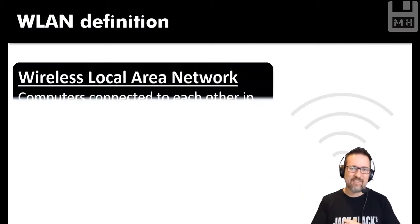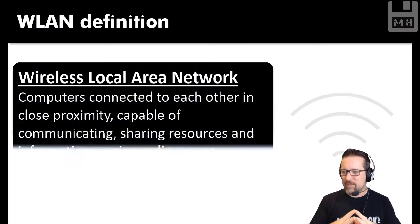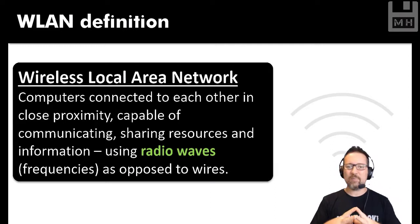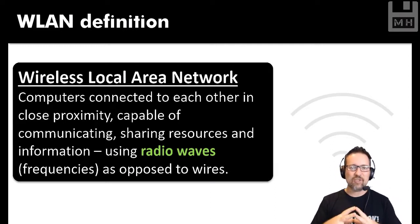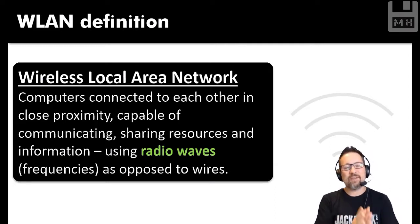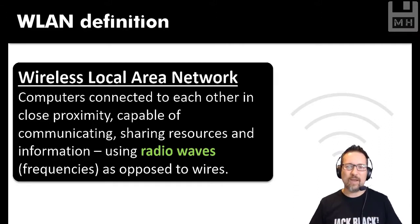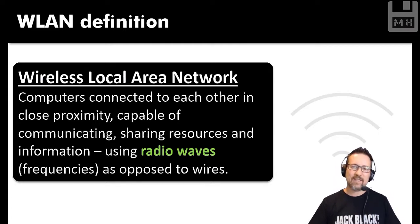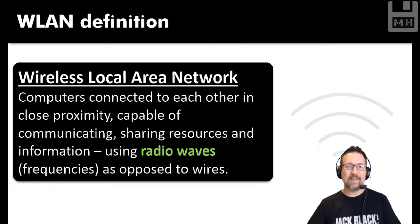A wireless local area network is basically the same: computers connected to each other in close proximity, capable of communicating and sharing resources and information. However, this is where the wireless part comes in — using radio waves or radio frequencies as opposed to cables and wires. That's the main difference between a wired and wireless network.